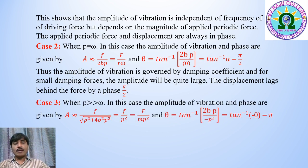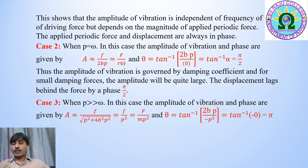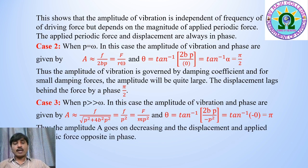Case 3: when p >> ω, the frequency of the external periodic force is very large compared with the natural frequency. The amplitude A ≈ f / p² = F / (mp²). The phase θ = tan⁻¹(2bp / −p²) = tan⁻¹(−0) = π. Thus the amplitude A goes on decreasing and the displacement and applied periodic force are opposite in phase. In this way we have explained forced oscillations, the forced oscillator, the differential equation of the forced oscillator, its solution, and the different cases. Thank you.